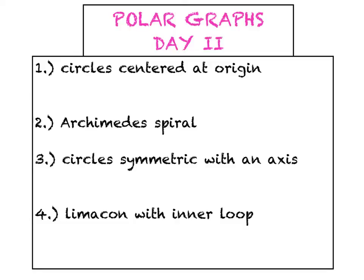Just to review what we've covered so far, the first thing we talked about was circles that were centered at the origin, and these came in very simple forms such as r equals 4, and that was a circle that had a diameter of 8 or simply as indicated a radius of 4. We also looked at Archimedes' spiral, r equals theta, and that was a real fun one.